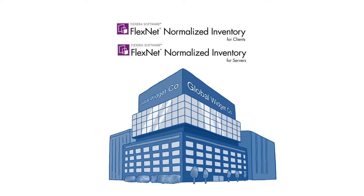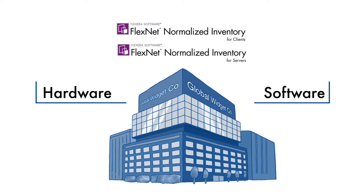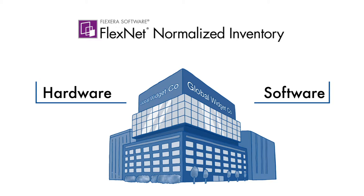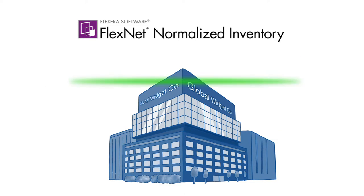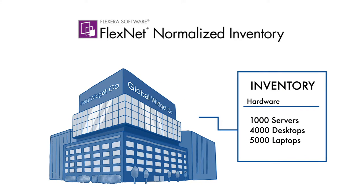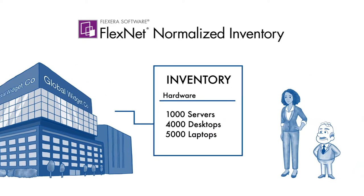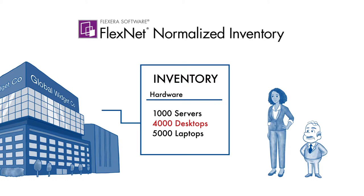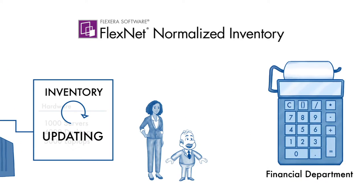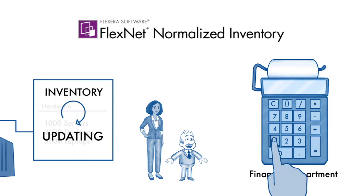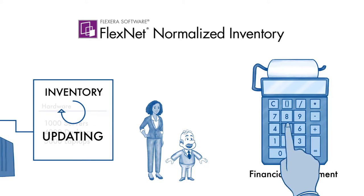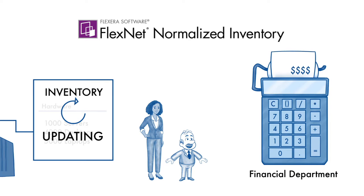Organizations that need visibility into their deployed hardware and software assets need FlexNet normalized inventory solutions. Flexera automatically scans your network environment or leverages your existing discovery tools to make an inventory list of all your computing hardware assets. It also lets them know if a computer is missing, which can be a security and financial risk. This gives Tori and her boss a complete picture of all their desktops, laptops, and servers. They can provide accurate data to update the fixed asset register to help their finance department properly value and depreciate assets for accounting and tax purposes, which can save them money.